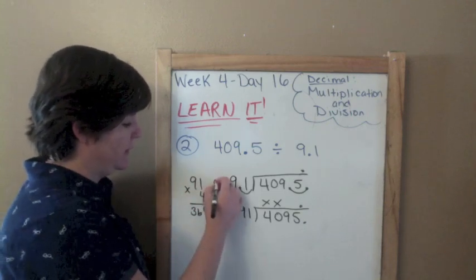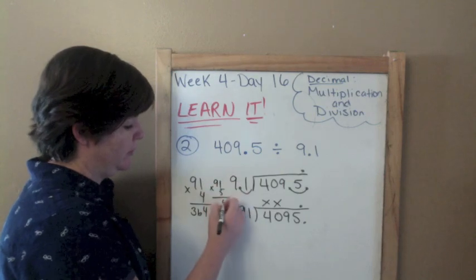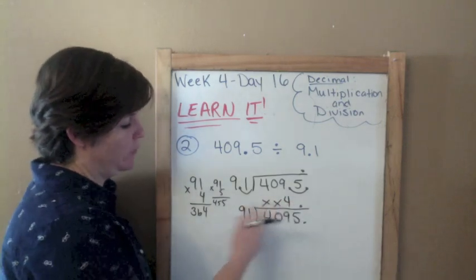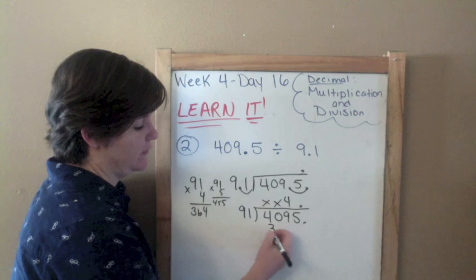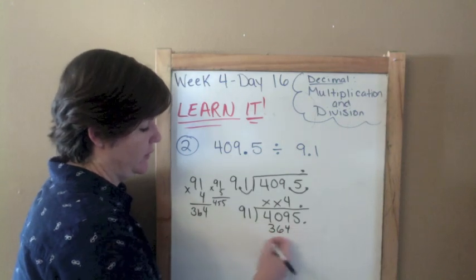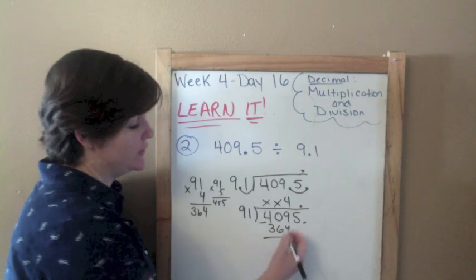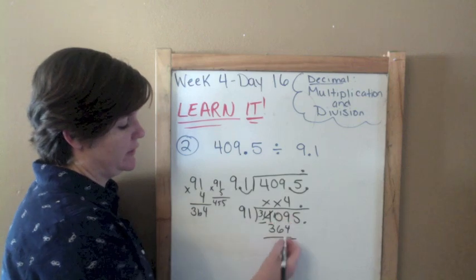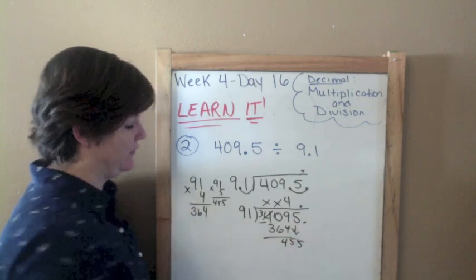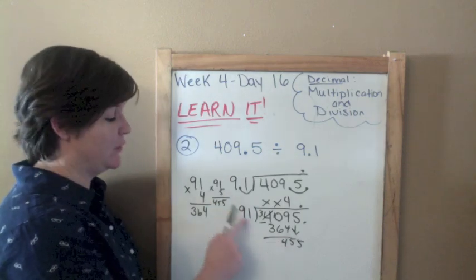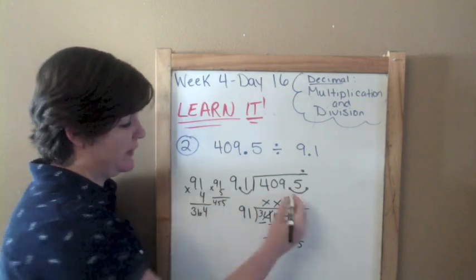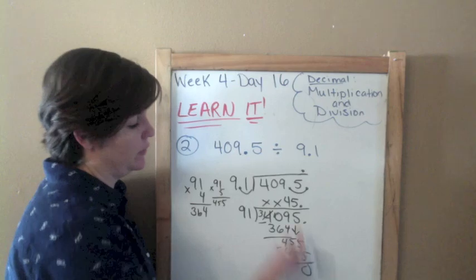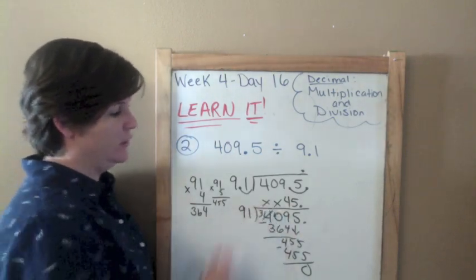4, 364. And then 9 times 5 would be 455, which is too much. So, 4 times. Now we multiply. 4 times 91 is 364. Then we subtract. 9 minus 4 is 5. 0 minus 6, we can't do that, so we regroup. 10 minus 6 is 4. Bring down our 5. It goes into it. How many times does 91 go into 455? It's right there. 5 times. Easy peasy. And we get a remainder of 0. So 45 will be our answer.